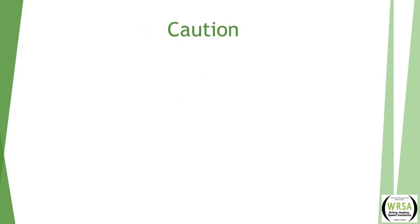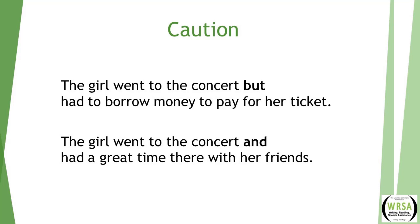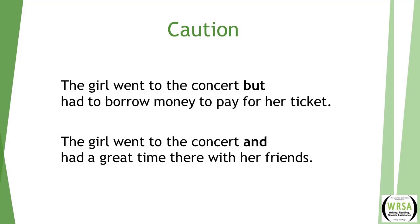Caution! If there is a conjunction, it does not always mean you have two sentences, and it does not always mean you need a comma. For example, here are two previous sentences rewritten: 'The girl went to the concert but had to borrow money to pay for her ticket.' Notice we have omitted the 'she,' which was the second subject. If you do not have someone doing something in that second clause, you do not need a comma and conjunction. Second example: 'The girl went to the concert and had a great time there with her friends.' There's the conjunction, but no subject follows it, so you do not need the comma. 'Had a great time there with her friends' cannot stand on its own as a sentence — this is a good way to check yourself.